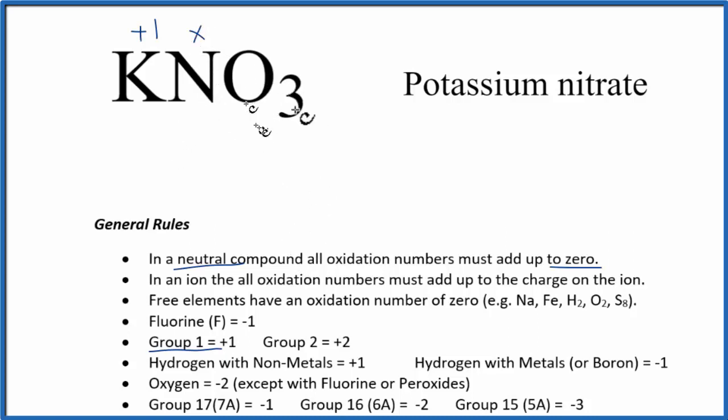And then oxygen, we have three oxygens. Oxygen has an oxidation number of minus two. So we have three oxygens and each one is minus two.